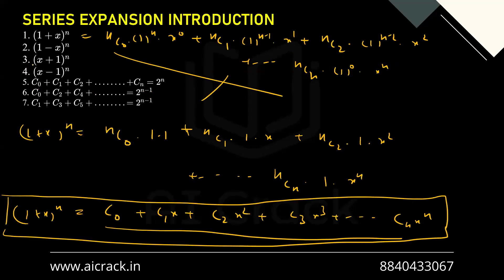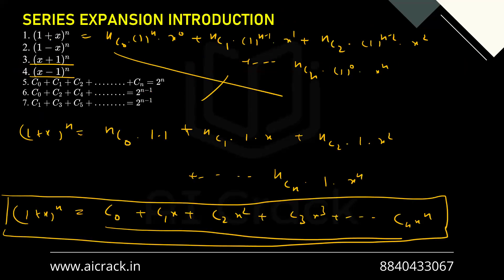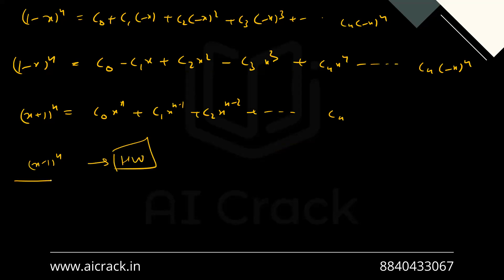Now for (x+1)^n and (x-1)^n: (x+1)^n = C0·x^n + C1·x^(n-1) + C2·x^(n-2) till Cn·x^0. Here x^n appears instead of 1^n because x takes the place of 1 in the expansion. You can keep (x-1)^n as homework — just derive and learn it. You have to remember all these series on your fingertips.